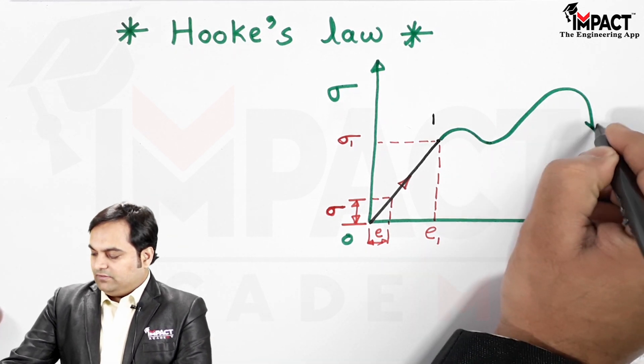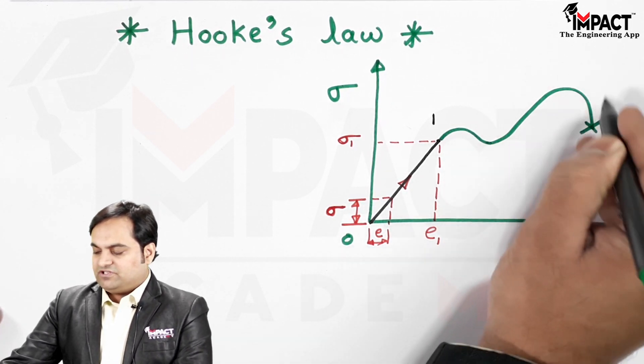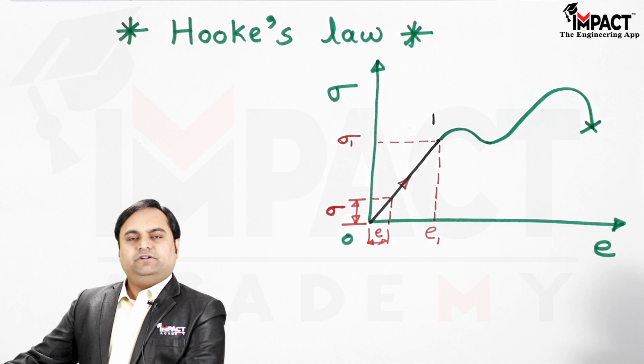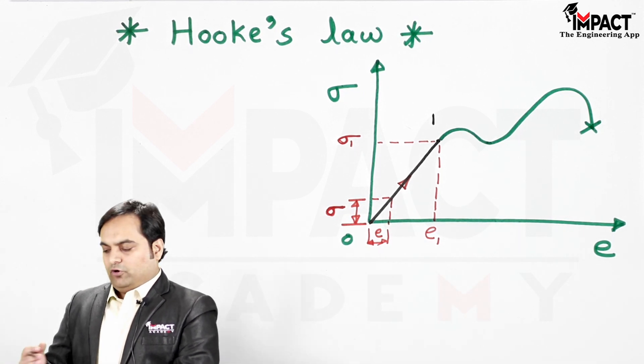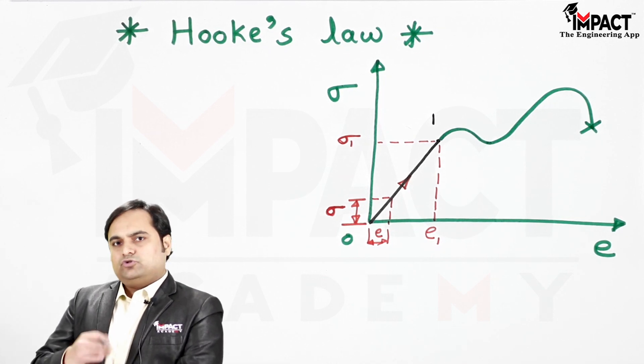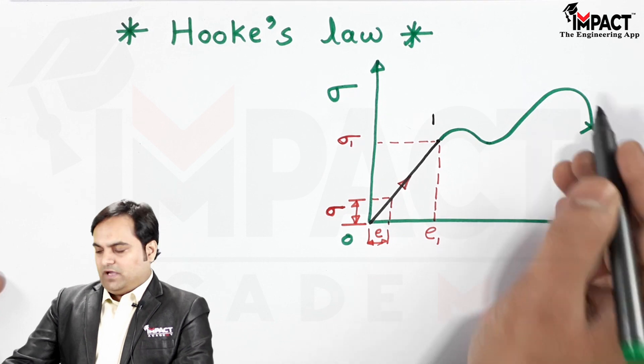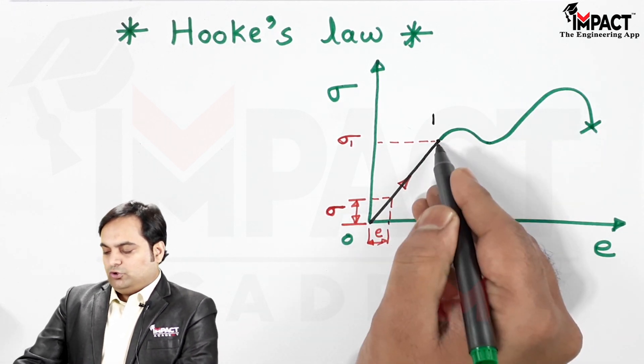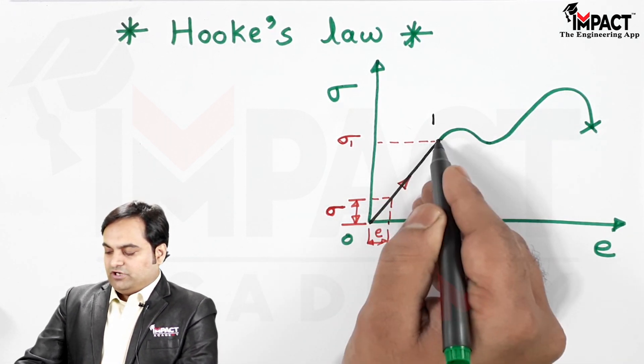I won't be explaining the points which are further, called the yield point. For that you can refer to my video on the stress versus strain graph for ductile material, whose link would be provided in the description below. The focus is only up to 0 to 1, that is up to the proportional limit.